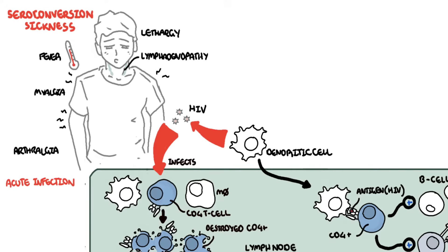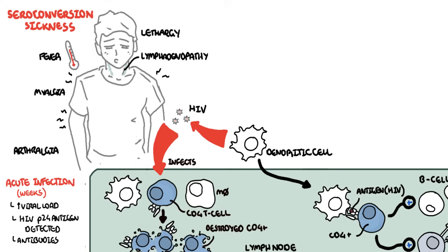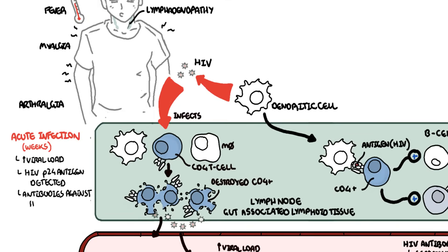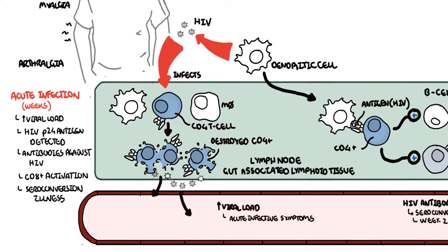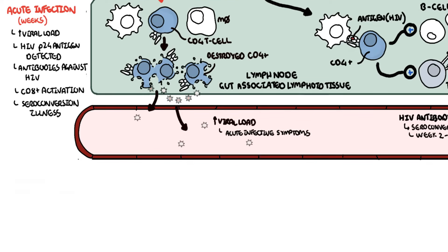In summary, the acute infection in the first weeks causes an increase in viral load of the HIV virus. You get the presence of HIV P24 antigen and the presence of antibodies against HIV, which begin to appear between weeks 2 and 4. You also get the CD8 T cell being activated. In this period, you also get seroconversion illness, which can be very mild and even go unnoticed.